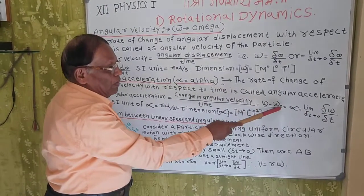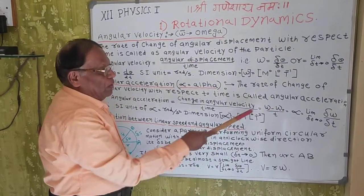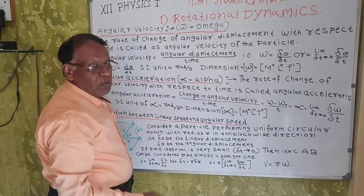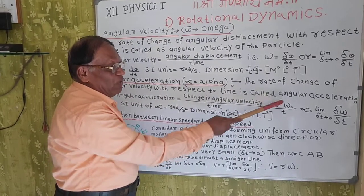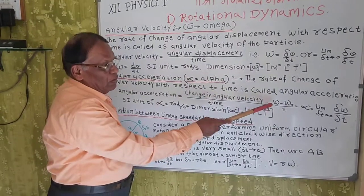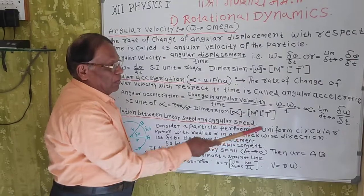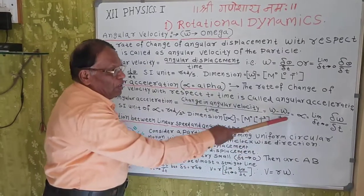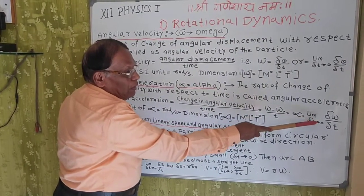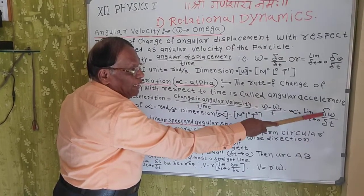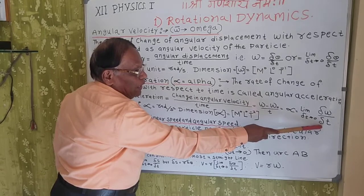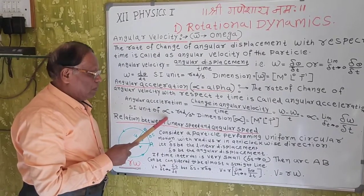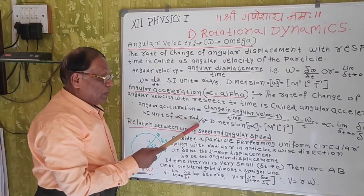If omega-0 is the initial angular velocity and omega is the final angular velocity, then the change in velocity is omega minus omega-0 divided by time t. Therefore, the formula becomes alpha equals the limit as delta t tends to 0 of delta omega divided by delta t. The SI unit of angular acceleration is radian per second squared.